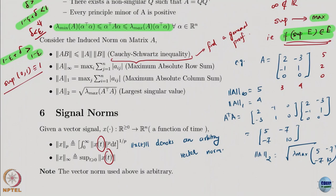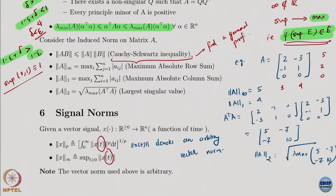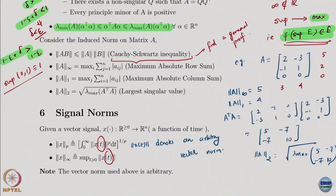All I have done is compute the absolute row sum and absolute column sum, take the maximum absolute row sum for the infinity norm, take the maximum absolute column sum for the 1-norm, and for the 2-norm you compute A-transpose A and find the largest eigenvalue — a little bit more work.